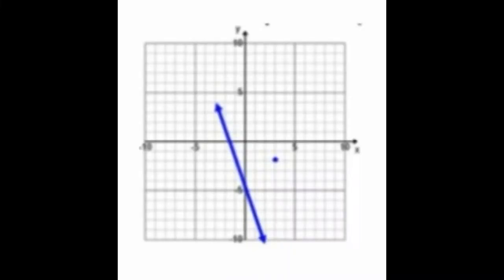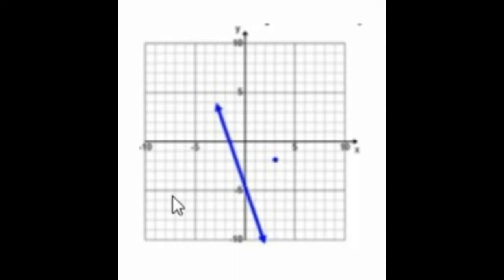Graphically, here's what it looks like. Here's our line y equals negative 3x minus 5, and here's the point that we need our perpendicular line to go through: 3, negative 2. Visualize what that would look like, because remember, perpendicular lines form right angles.